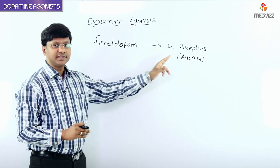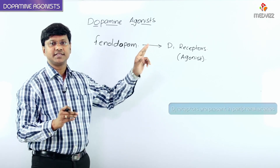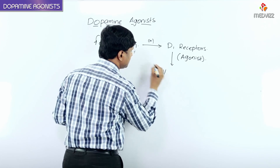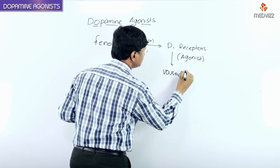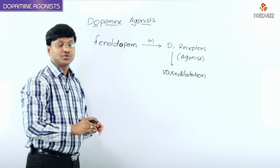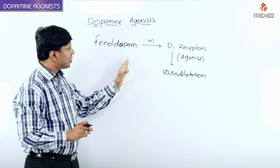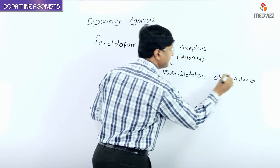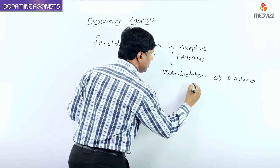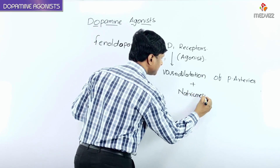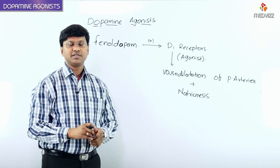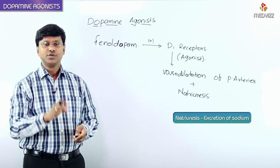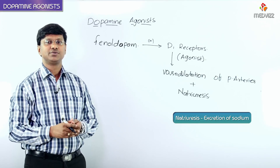By stimulating the D1 receptors — which are present in the peripheral arteries — fenoldopam causes vasodilation. Whenever there is vasodilation, the blood pressure of the individual reduces. Not only that, fenoldopam also causes natriuresis, which means excretion of sodium. Whenever sodium is lost, water is also excreted, so the blood volume reduces and thereby blood pressure reduces.